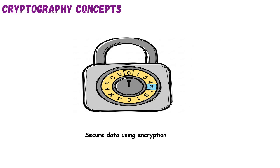It involves key elements like confidentiality, integrity, and authenticity, and uses methods like symmetric and asymmetric encryption. You'll encounter terms like plain text, ciphertext, keys, and algorithms — all part of this protective system. The goal is to ensure sensitive data remains private, even if intercepted.